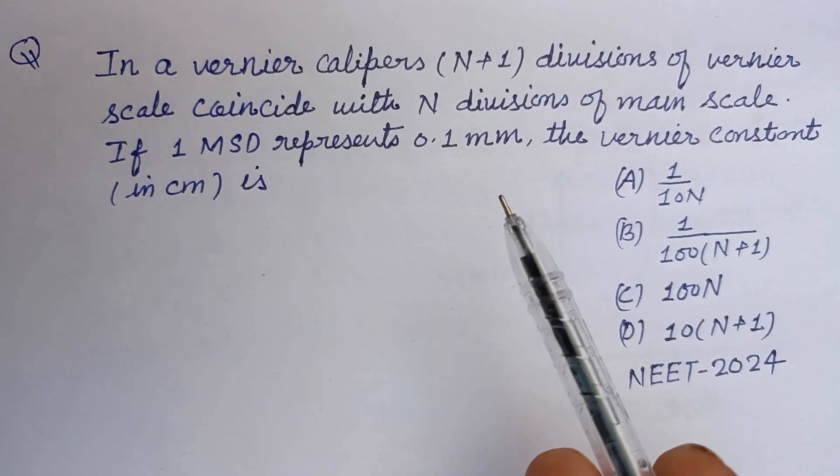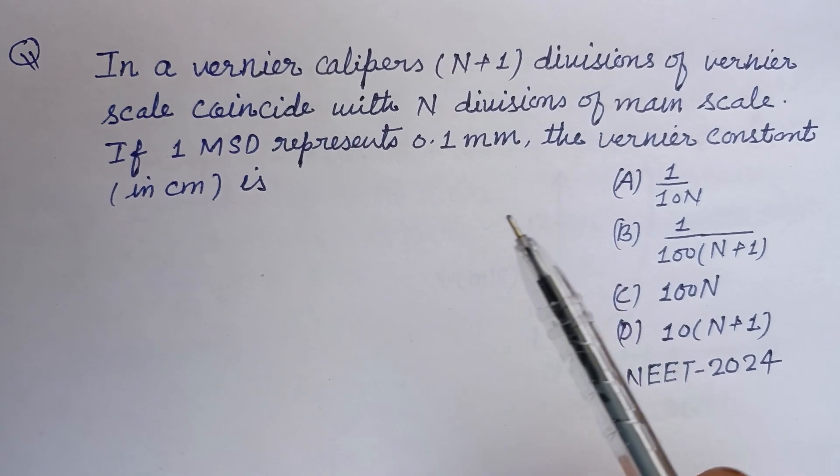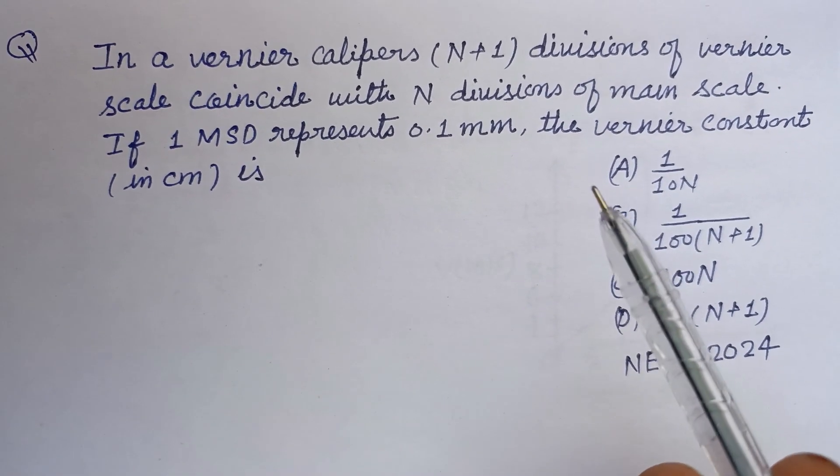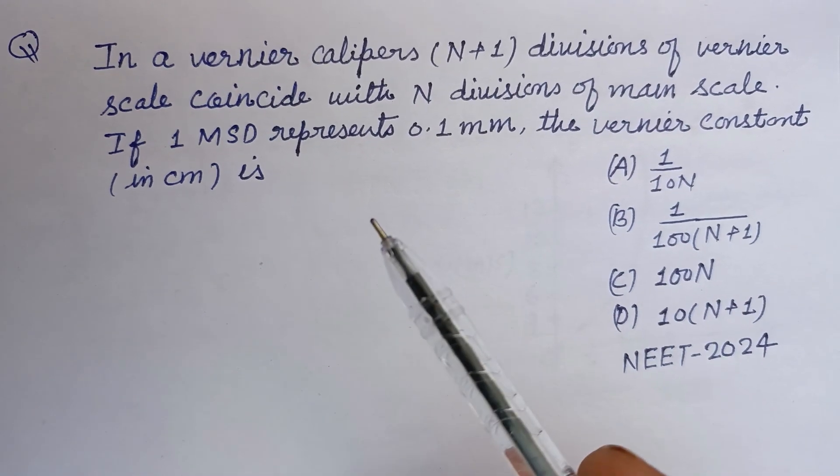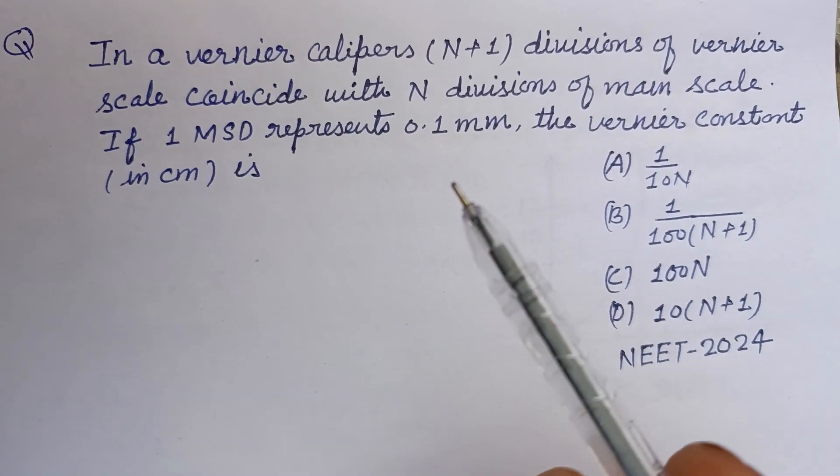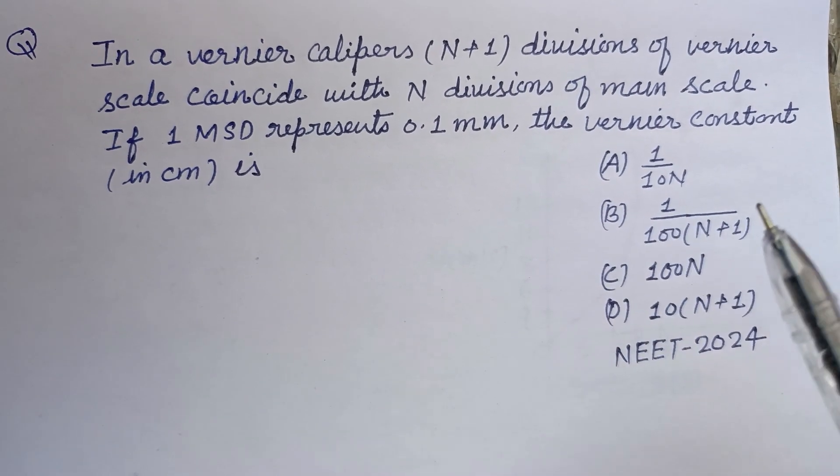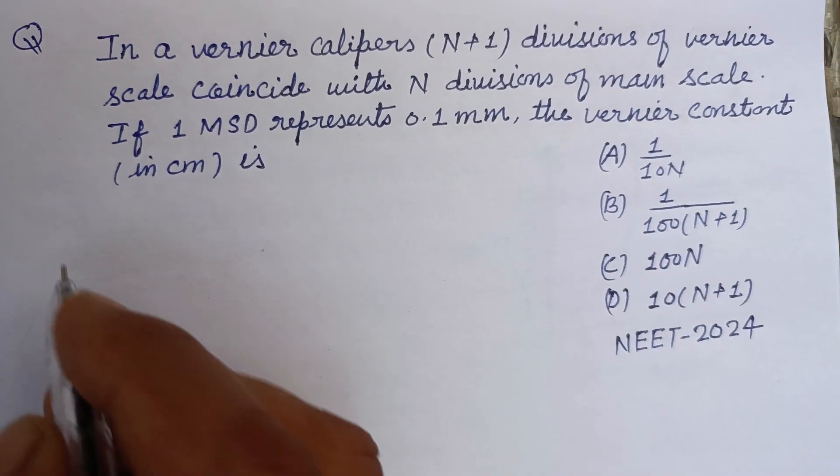In a Vernier Calipers, N plus 1 divisions of Vernier scale coincide with N divisions of main scale. If 1 MSD, main scale division, represents 0.1 mm, the Vernier constant in cm is.